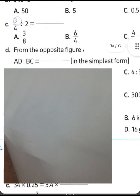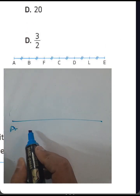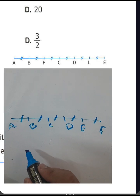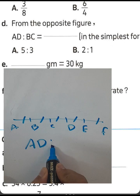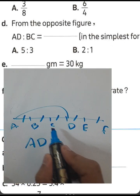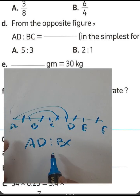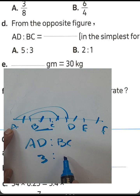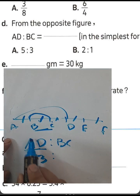Question letter D: from the figure, find the ratio between AD and BC. We have a line segment divided into five equal parts labeled A, B, C, D, E, and F. Count the parts: AD spans 1, 2, 3, 4 parts; BC spans 1 part. Find the ratio between AD and BC.